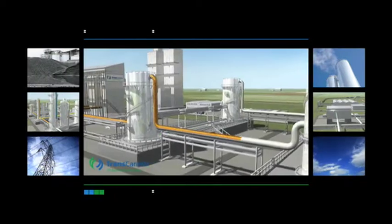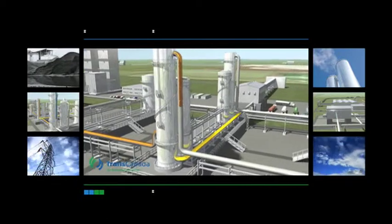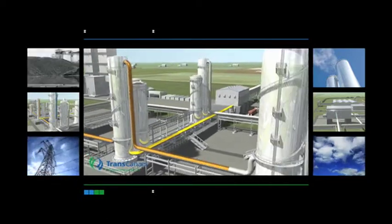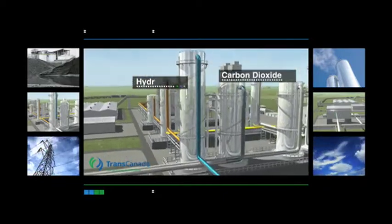A cleanup process will then isolate substances such as sulfur for reuse or disposal. The syngas then goes on to be split into its two component gases, hydrogen and carbon dioxide.